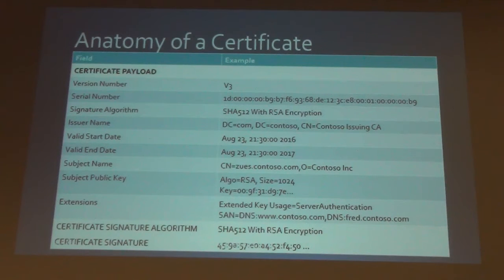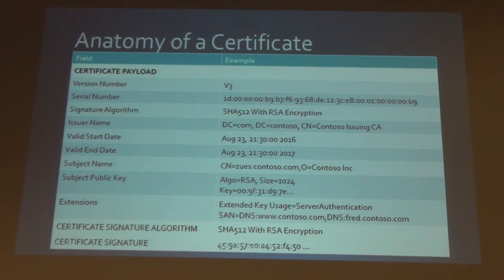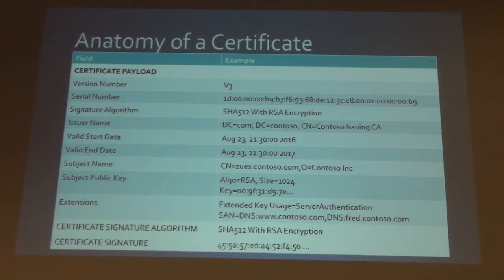Certificates are signed with a signature, so one of the things you have to have in the certificate is you need to understand what the signing algorithm was — for example, RSA. Then you have the issuer name — that's the certificate authority that issued the certificate. Certificates use X.500 name formats or distinguished names. Here: DC=com, DC=Contoso, common name = Contoso Issuing Certificate Authority. That is the entity, the CA, that created this certificate. You also have a valid start and end date.